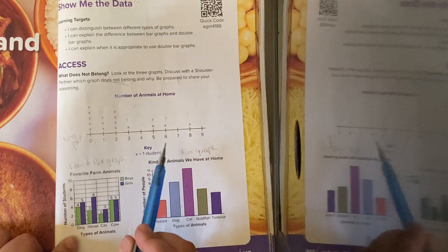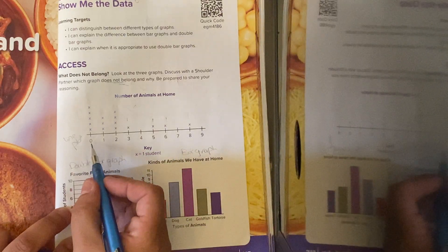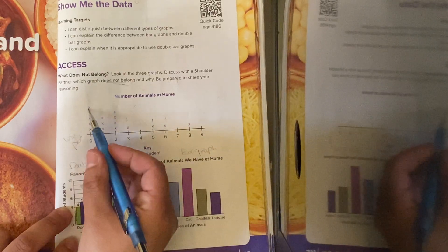Here, in this line plot is talking about number of animals at home. Here, how many people doesn't have animals at home? 1, 2, 3, 4, 5.